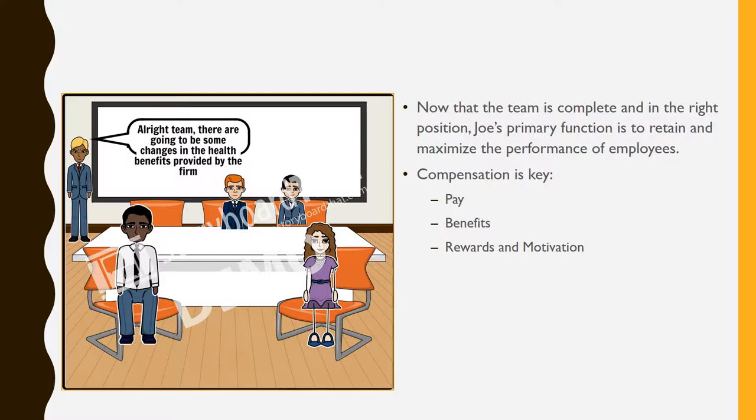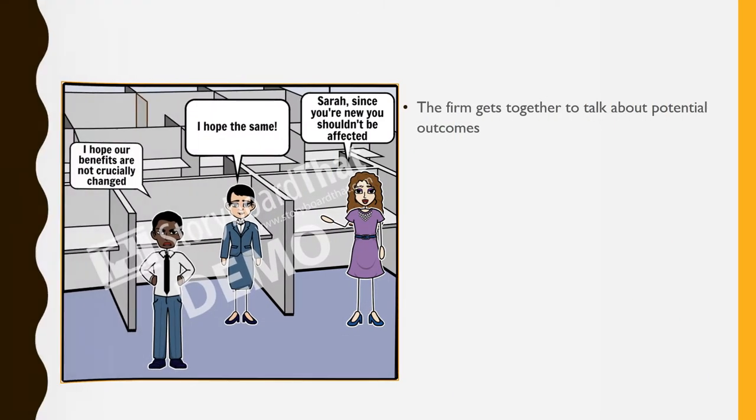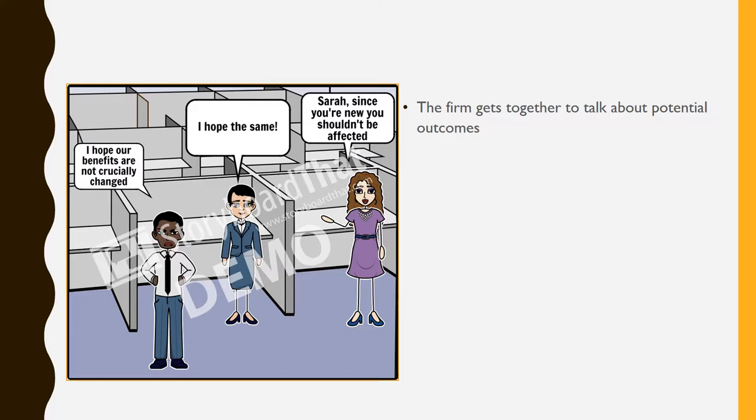Like many other factors, compensation is key. The firm gets together to talk about potential outcomes. They are worried that Joe will not provide them with basic needs such as medical health.